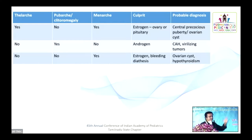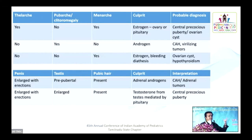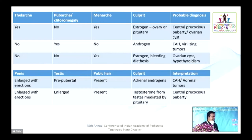To summarize Tanner stage clues: early thelarche means estrogen is the culprit — is it simple thelarche or precocious puberty? Clitoromegaly in a girl means androgen excess state — check for CAH or a virilizing tumor. Menarche without thelarche and pubarche suggests a peripheral cause like hypothyroidism or ovarian cyst. In boys, frequent erections and large penis but small testes suggest adrenal androgen — likely CAH. Enlarged penis with large testes points to the pituitary as the driving force — have a low threshold to perform an MRI. None of these clues require a laboratory test.